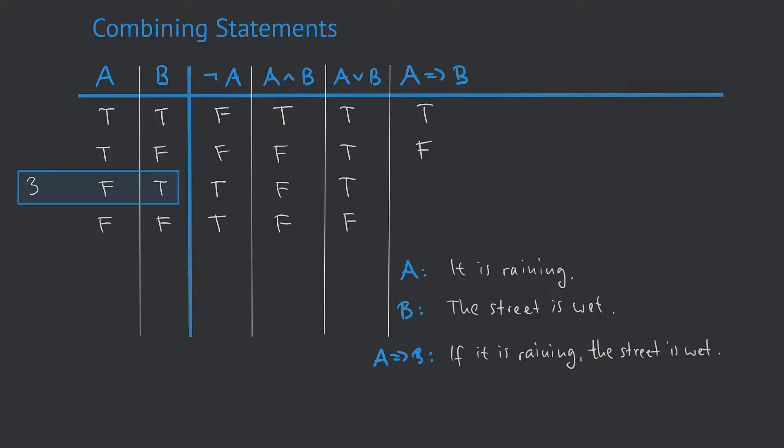In the third line, A is false and B is true — meaning it is not raining, but the street is wet anyway. We have to think like this: although the street is wet without rain, that doesn't mean the implication is not true. In fact, we are only interested in the street being wet whenever it's raining. Because it's not raining, we don't care about whether the street is wet or not. So in this case, we also put true.